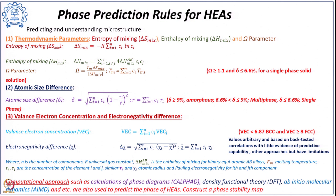However, these parameters reported in literature have been found to be arbitrary and based on back-tested correlations, with little evidence of their predictive capability. There are many other approaches, but they have their own limitations. There are conflicting literature studies which report dependence on these parameters, while other studies have reported little evidence of their predictive capabilities.